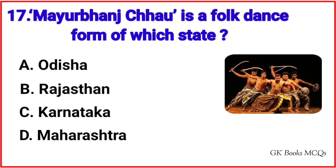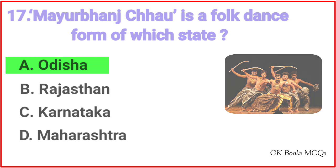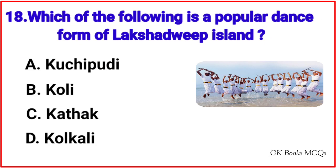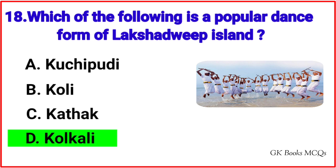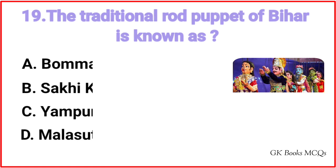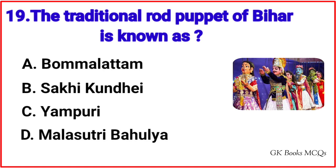Question number 17: Mayurbanj Chhau is a folk dance form of which state? Correct answer is option A, Orisa. Question number 18: Which of the following is a popular dance form of Lakshadweep Island? Correct answer is option D, Kolkali. Question number 19: The traditional rod puppet of Bihar is known as? Correct answer is option C, Yampuri.